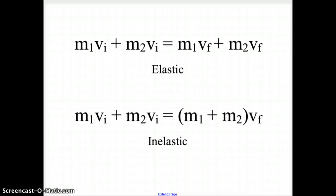Vi is the initial velocity and vf is the final velocity of the object. For inelastic collisions, these are collisions where the two objects are going to stick together after the collision. Therefore, the masses combine after the collision. In that case, we have m1·vi + m2·vi = (m1 + m2)·vf. There is only one final velocity because the two objects are one.